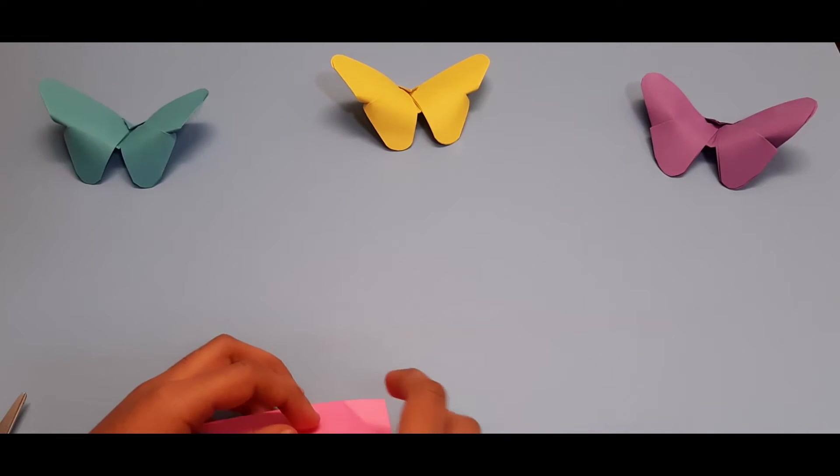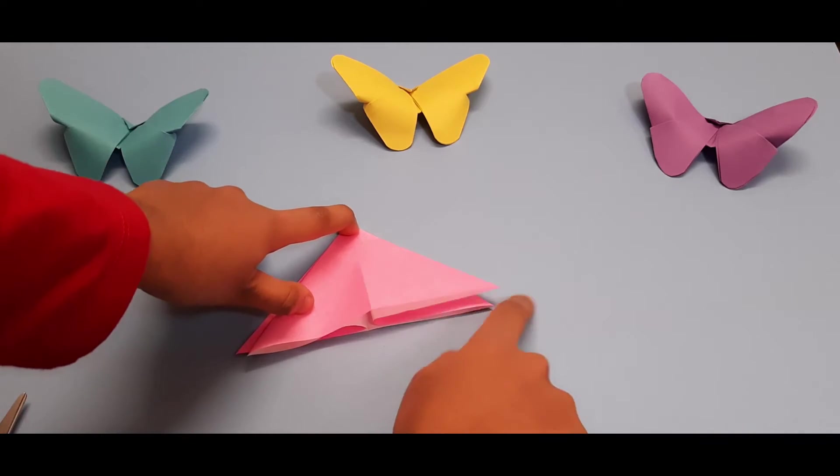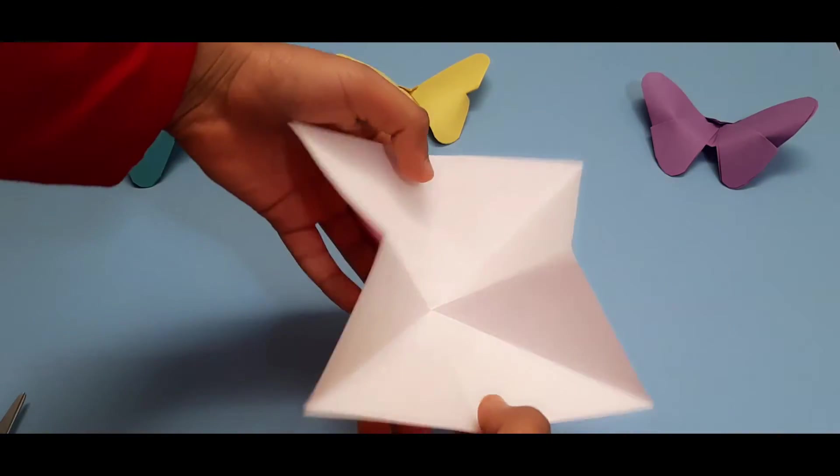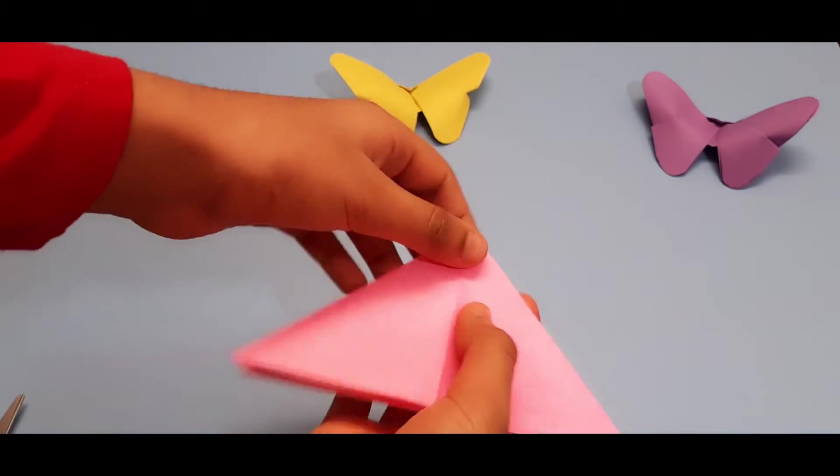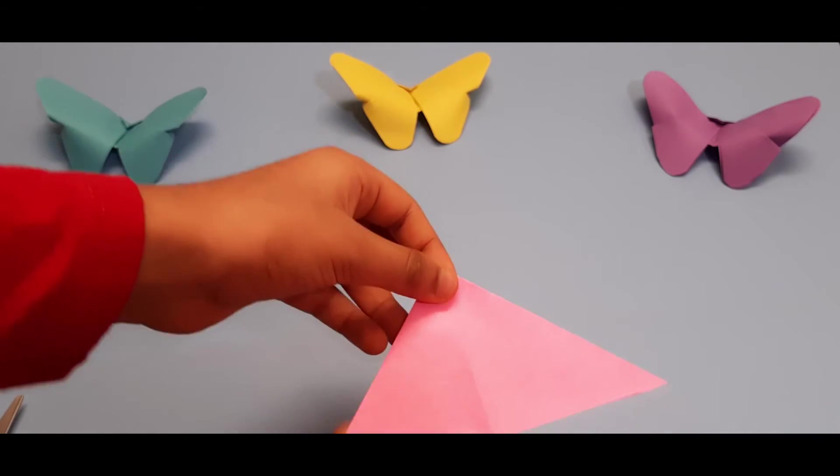Close it back to make a water bomb base. You should have something that looks like this. So from this piece of paper you fold it down into this piece of paper that looks like a triangle.